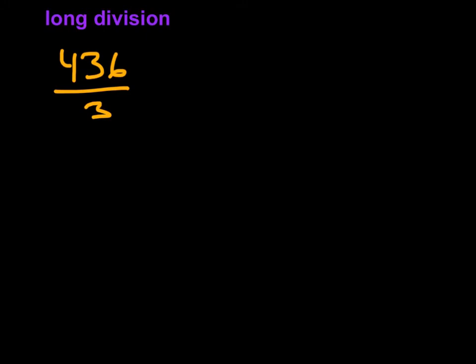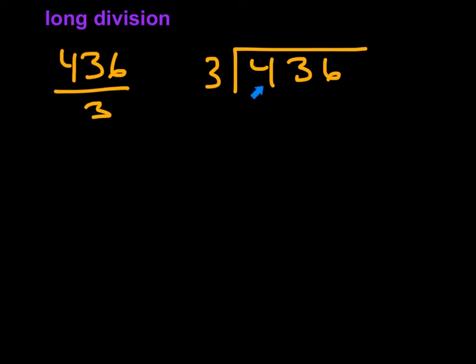Let's review basic long division that you learned a long time ago, just with real numbers. If I have 436 divided by 3, what we're going to do is say 3 goes into 436. We ask ourselves how many 3s are in the number 4. Well, there's only 1. So we do 1, and then remember you multiply this way.